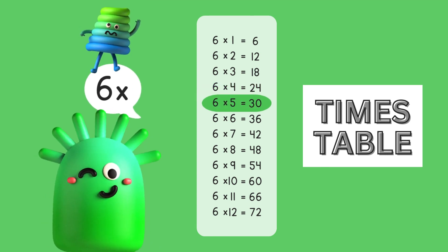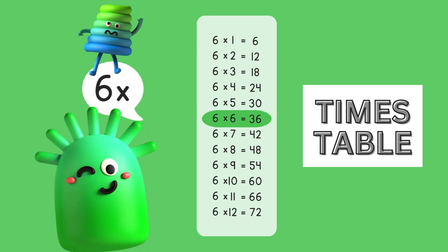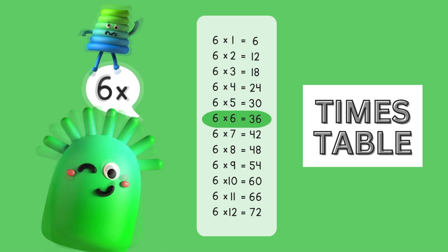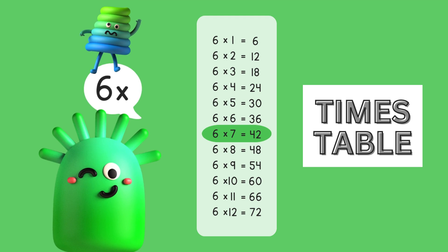Six times five is thirty. Six times six is thirty-six. Six times seven is forty-two. Six times eight is forty-eight.